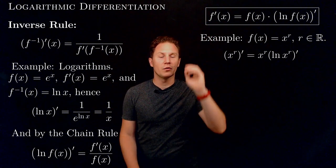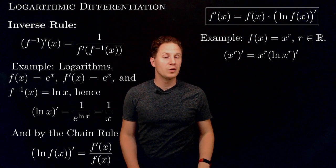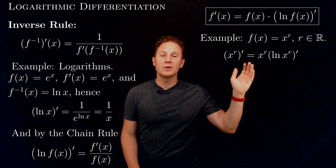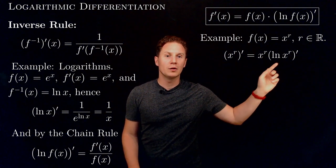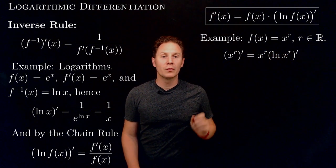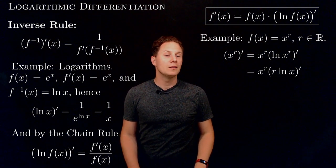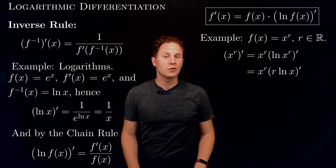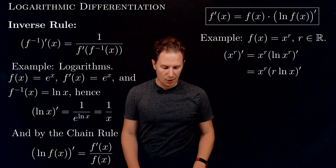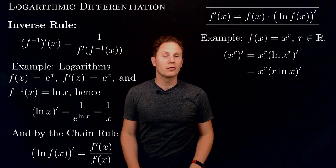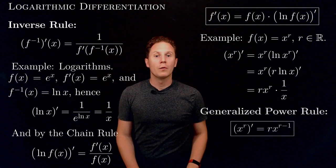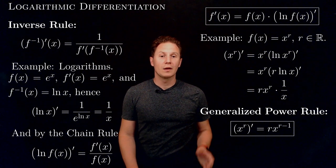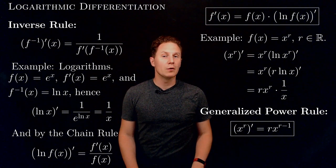We will establish it using logarithmic differentiation. Using the formula we just derived, substituting f of x equals x to the r, we get the derivative of x to the r equals x to the r times the derivative of the natural logarithm of x to the r. Before differentiating, we use a law of logarithms to bring the exponent r down in front, giving x to the r times the derivative of r times ln of x. Factoring out the constant r and differentiating ln of x gives 1 over x, so we obtain r times x to the r times 1 over x. After cancelling the x's, we obtain the generalized power rule, which works with real exponents.